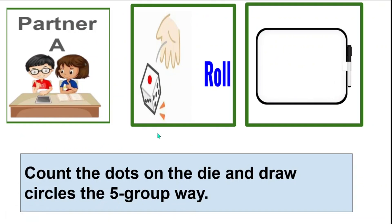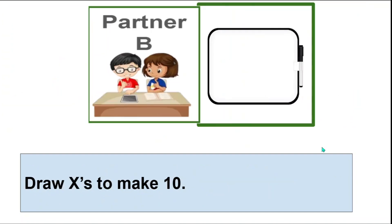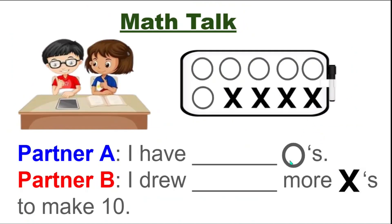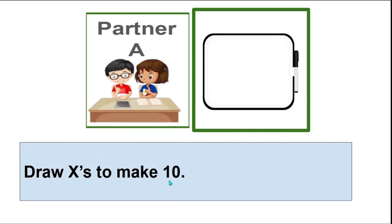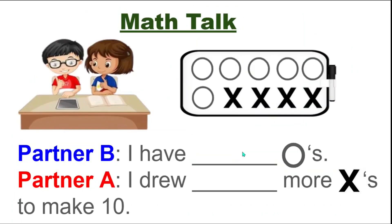Partner A, it's your turn to roll. Roll and draw that many circles the five-group way. Partner B, draw X's to make 10. Now have a map talk about your picture. Partner B, it's your turn to roll. Roll and draw that many circles the five-group way. Partner A, draw X's on the board to make 10. Have a map talk about your picture.